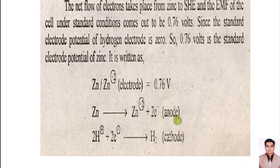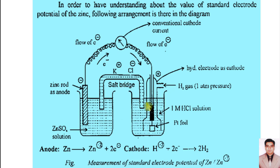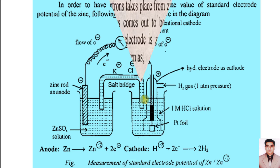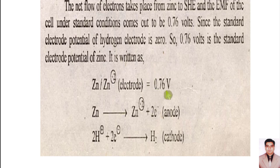The net flow of electrons takes place from zinc to SHE; the galvanometer shows 0.76 volts. This means zinc metal has been converted into zinc ions and zinc has lost two electrons. So zinc acts as anode and the hydrogen ions of the standard hydrogen electrode, by receiving these two electrons, are converted into hydrogen gas — so SHE works as cathode. From this we determine the electrode potential: if we couple zinc with the standard hydrogen electrode, the potential shown is 0.764 volts, which is the oxidation potential of zinc.